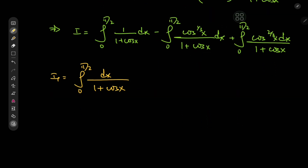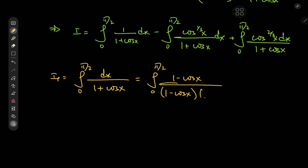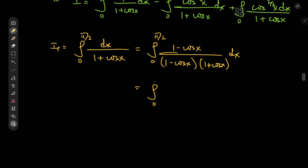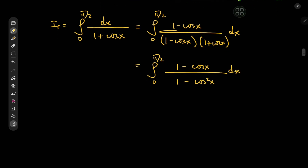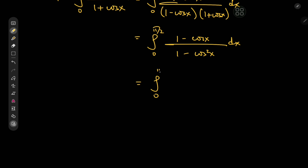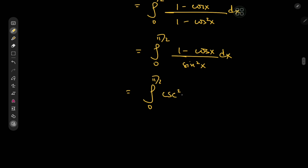Now we have three different integrals to evaluate. First up, I₁ is pretty straightforward. All we have to do is expand by a factor of (1 minus cos x). In the denominator we have (1 minus cos x)(1 plus cos x), which gives 1 minus cos²x, i.e., sine squared. So we have the integral from 0 to π/2 of (1 minus cos x) divided by sin²x dx. Expanding this gives us csc²x minus cot x · csc x dx.